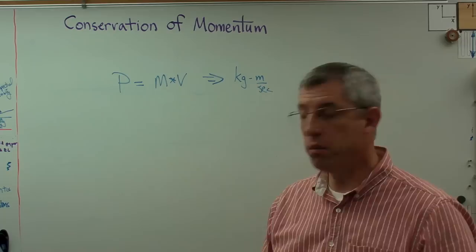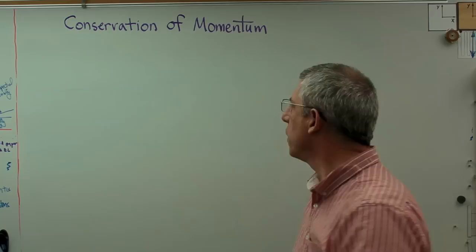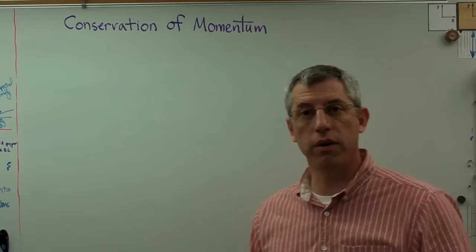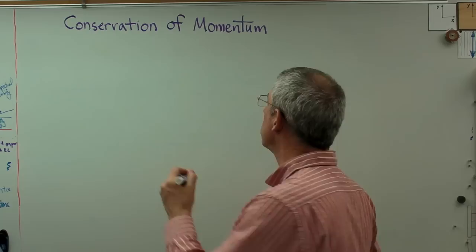You always read in the books that if there's no outside forces acting on a system, momentum is conserved. Well that sounds nice, but what does that mean? What's a system? A system is basically a box. If I can draw a box around a group of particles or bodies and no forces are going through the walls of that box, that means that's a system and momentum is conserved.